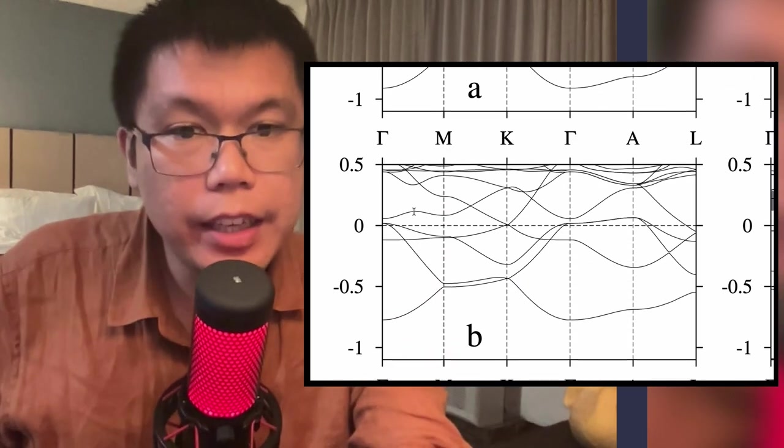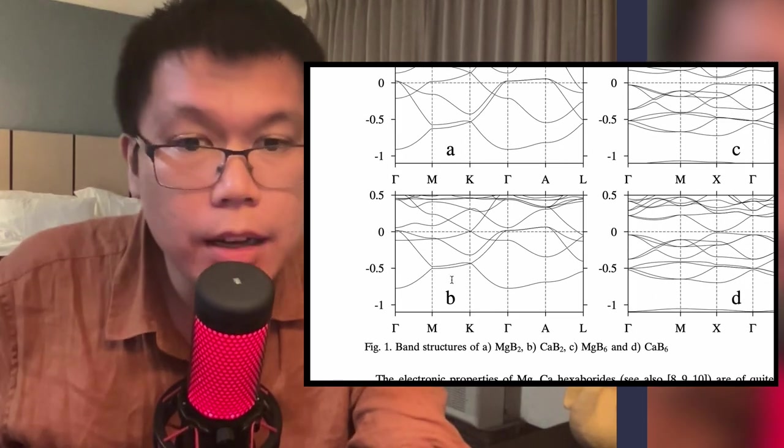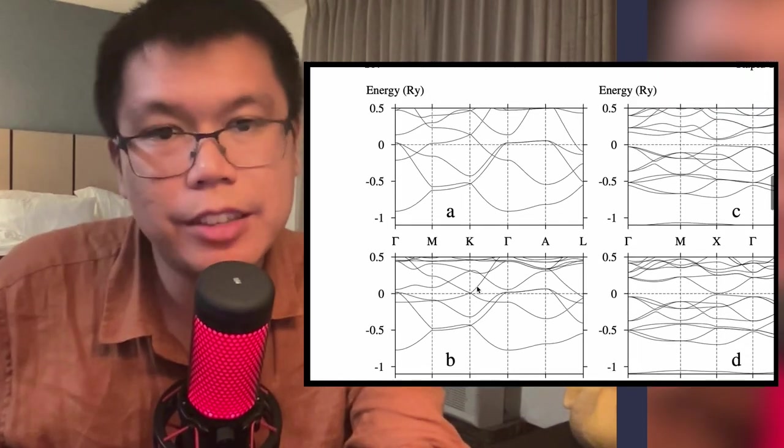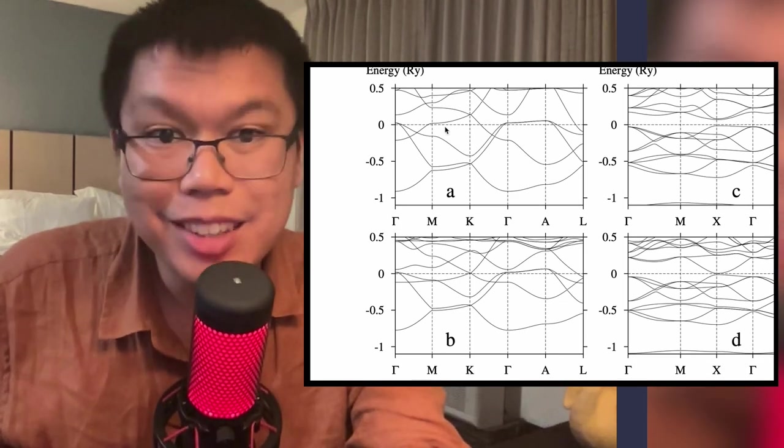For comparison, this is the band structure for calcium diboride, which is a non-superconducting material. So superconducting, non-superconducting. Two different band structures.